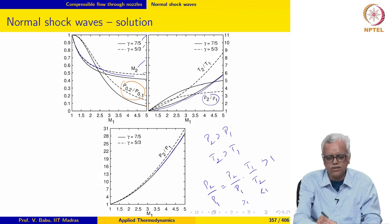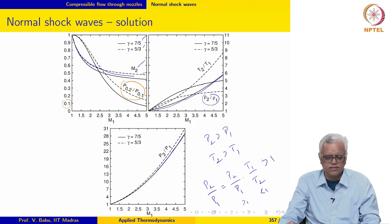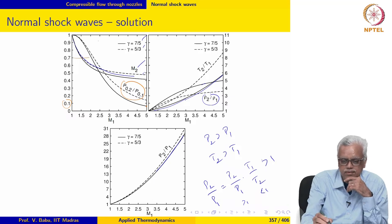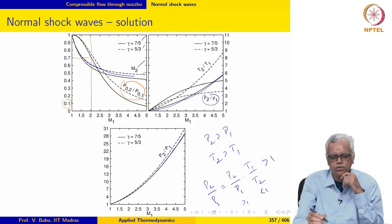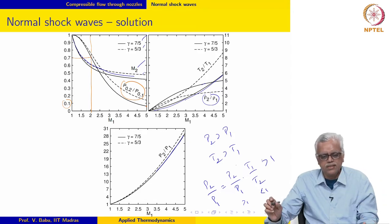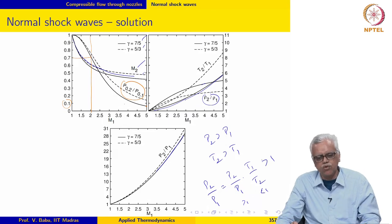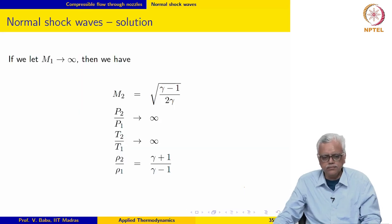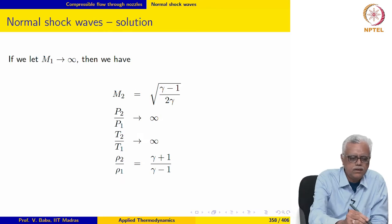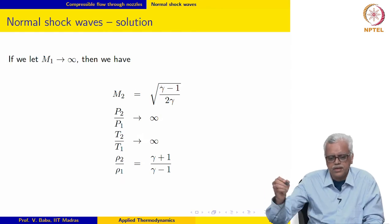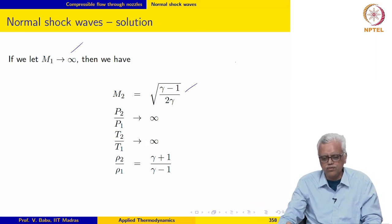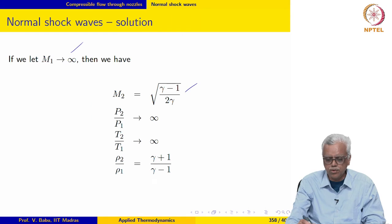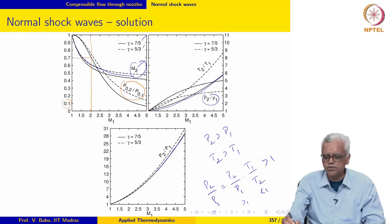At M1 equal to 5, the loss of stagnation pressure is almost 90 percent. For M1 equal to 2, the loss is only about 30 percent and begins to fall steeply only after M1 equal to 2. By allowing M1 to tend to infinity, we can show the asymptotic value for M2 and the asymptotic value for rho2 over rho1, which is what we are seeing here.